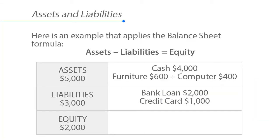Here's an example that applies the balance sheet formula of assets minus liabilities equals equity. If a business has assets of cash $4,000, furniture of $600, and a computer of $400, that adds up to $5,000 in assets. If a business has a bank loan for which it still owes $2,000 and a credit card payment due of $1,000, that's total liabilities of $3,000.